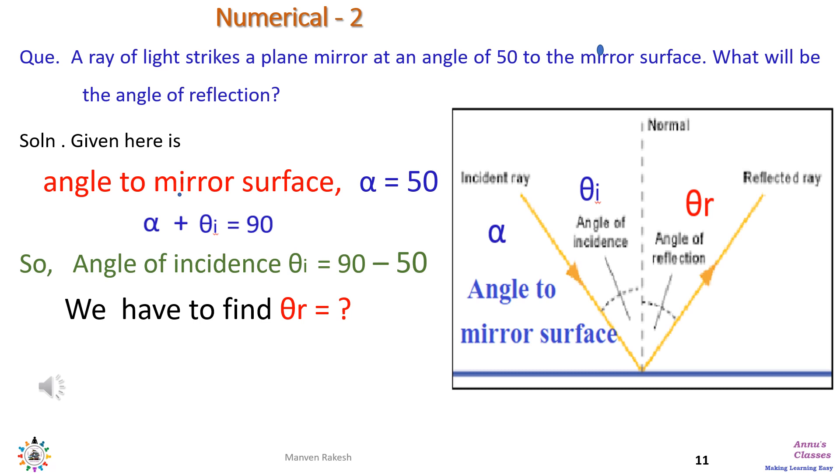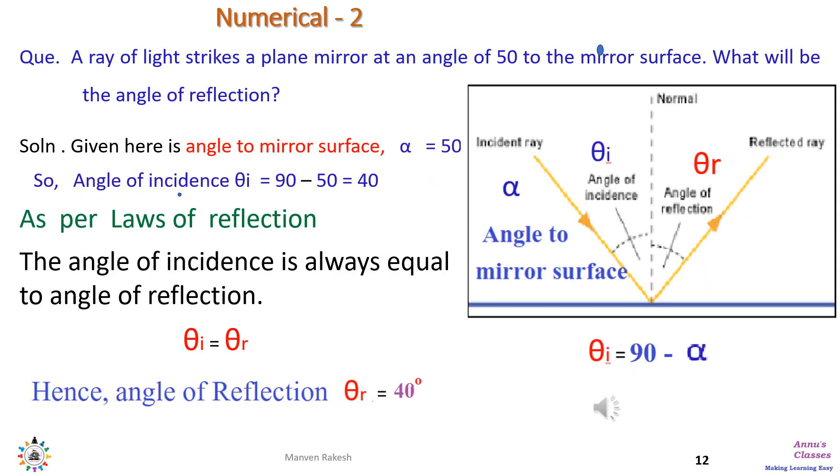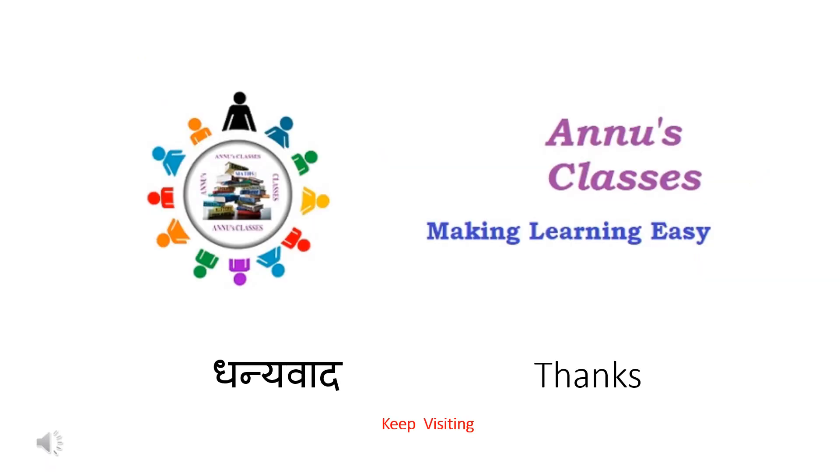Now we have to find the angle of reflection, that is θr. Once angle of incidence is known, we can apply the law of reflection according to which θi equals θr. Therefore, angle of reflection is 40 degrees. That is our answer. So we complete this portion of the chapter. Thank you very much for watching this video. If you liked it, please subscribe to the channel. Thanks again.